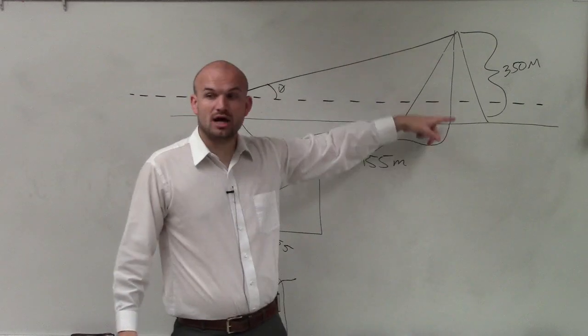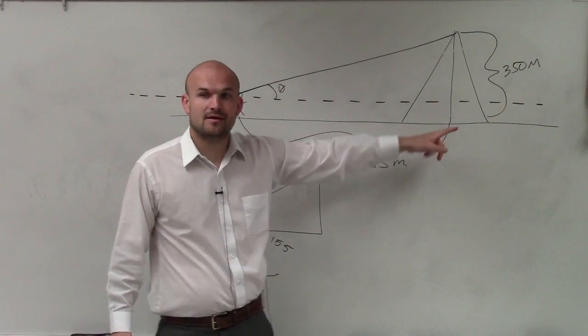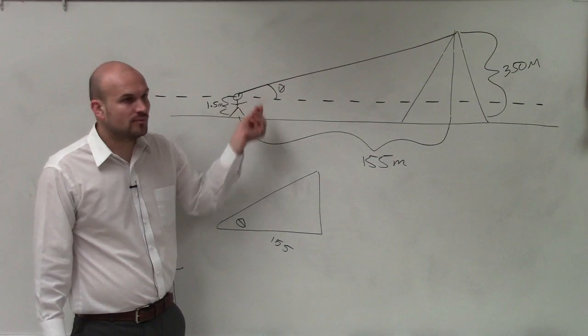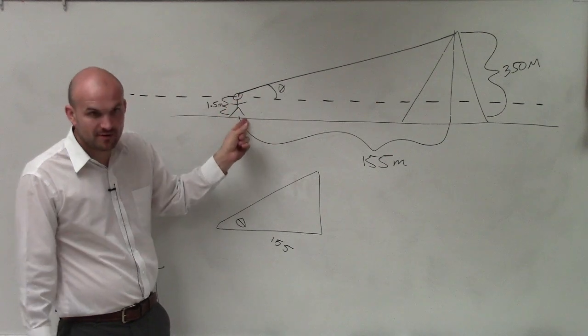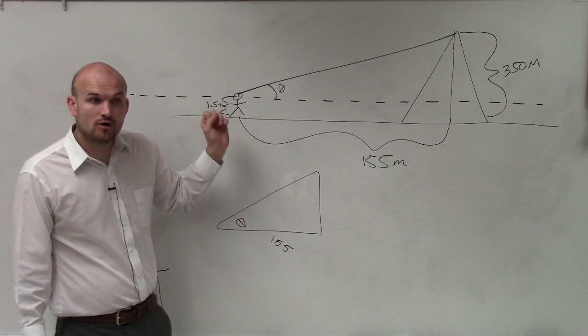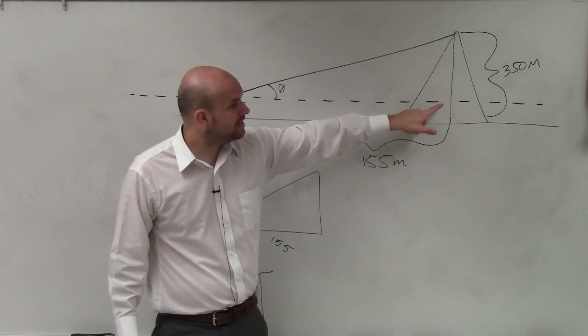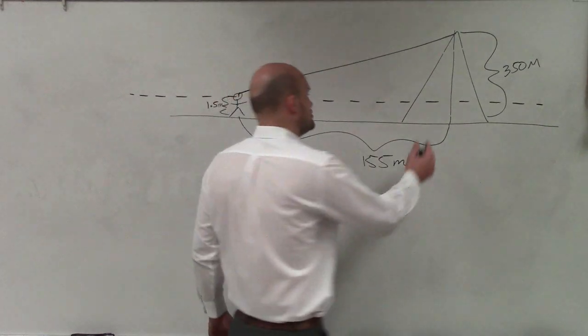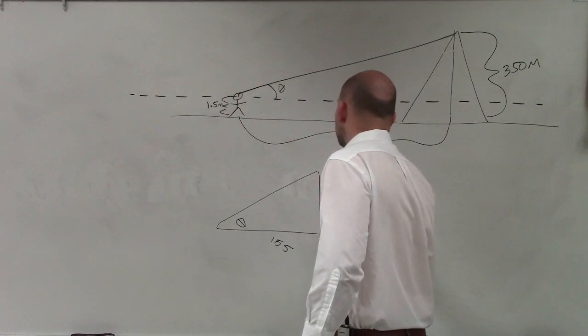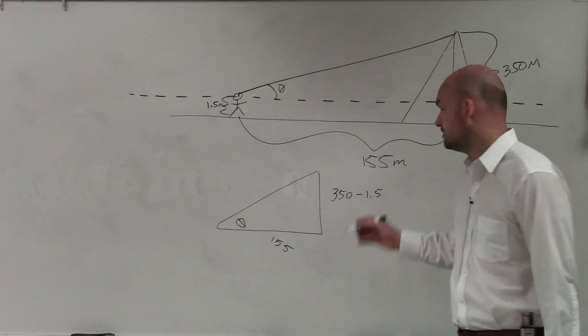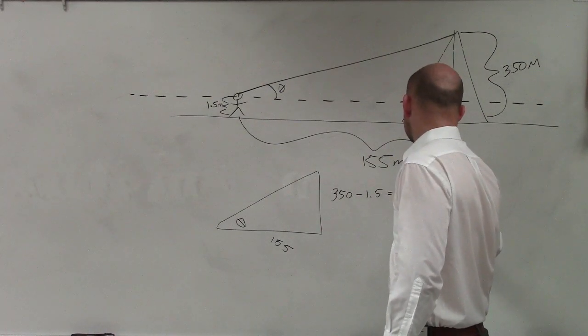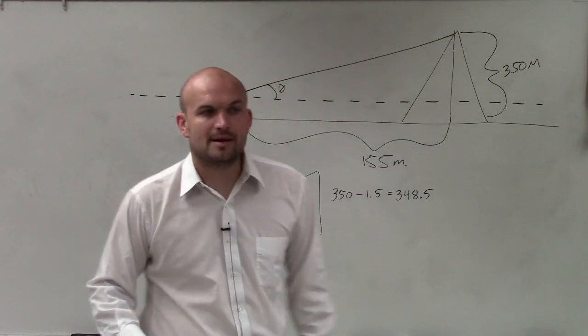Now, we do know that the total height of the mountain is 350, but then we're subtracting the 1.5 meters, right? Because we're not trying to find the angle of elevation from his feet. We're trying to find the angle of elevation from his eyes. So what we need to do now is determine what is 350 minus 1.5. So that's going to be 348.5.